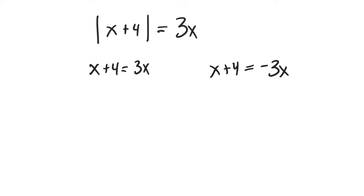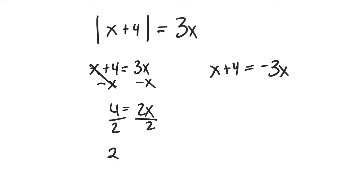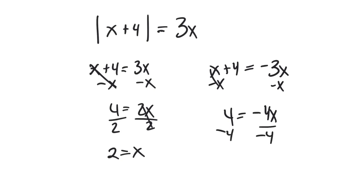For the first equation, I subtract x from each side and get 4 equals 2x, then divide by 2 to get x equals 2. For the second equation, I subtract x from each side to get 4 equals negative 4x, then divide by negative 4 to get x equals negative 1.